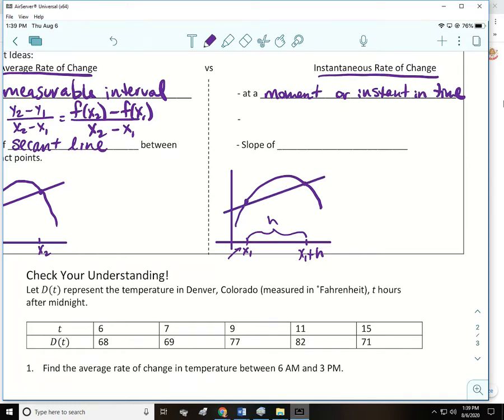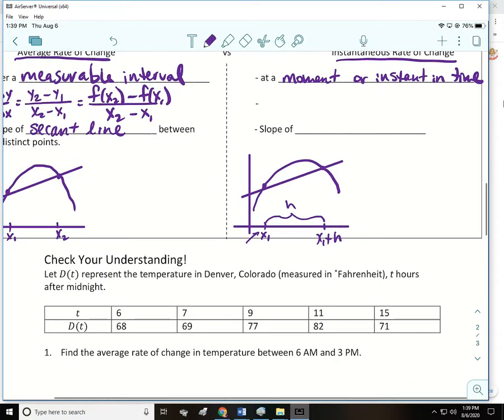It would be x1 plus h. Now what we want for instantaneous rate is for that h to get smaller and smaller and smaller, so those points would get closer and closer and closer together. Eventually it's a line that just touches, just scrapes it at one point. Do you know what that kind of line is called? It's a tangent line.